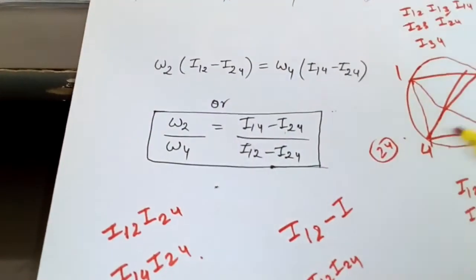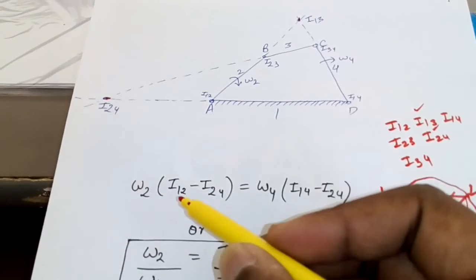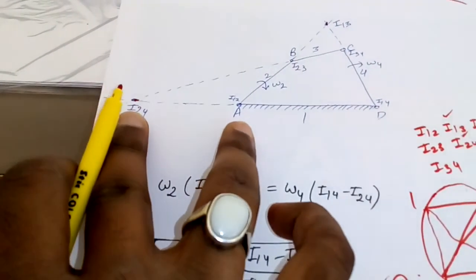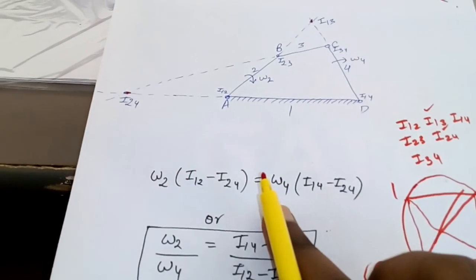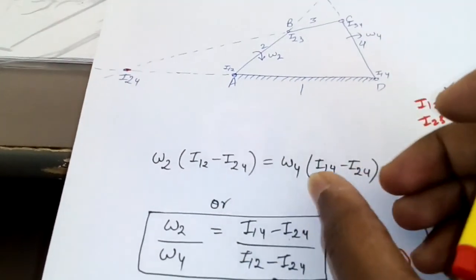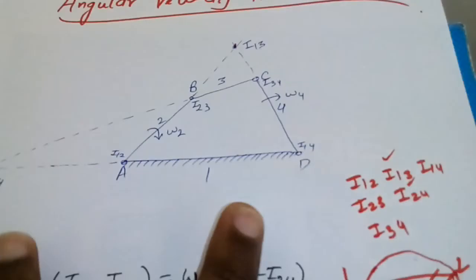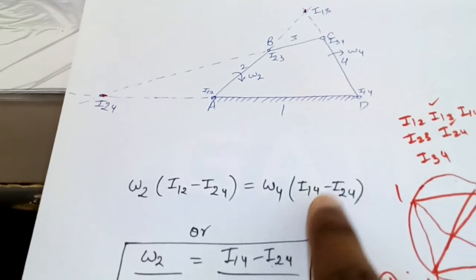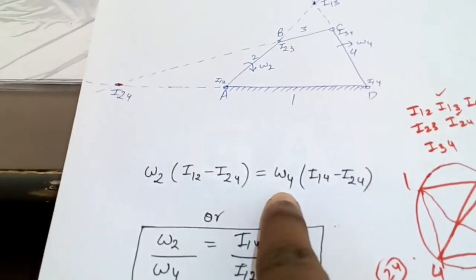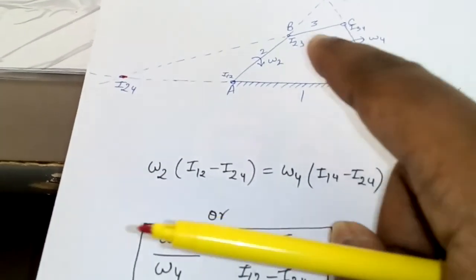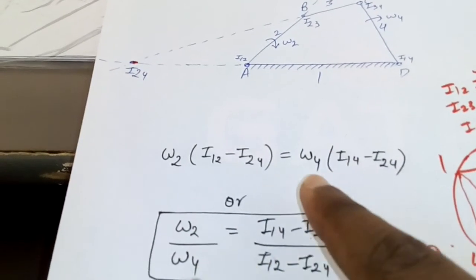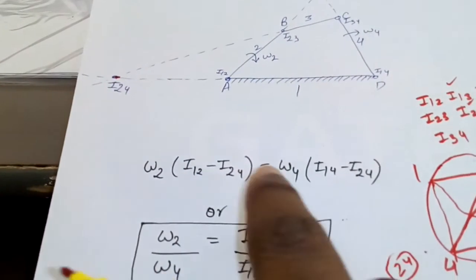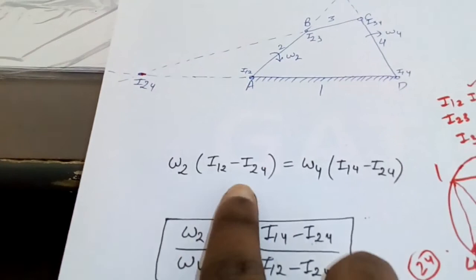So the equation becomes: omega 2 × (distance i12 to i24) = omega 4 × (distance i14 to i24). Since omega 2 is known, you measure the distance from i12 to i24 and from i14 to i24 on your diagram, substitute into the equation, and solve for omega 4. Vice versa, if omega 4 is known you can similarly find omega 2.